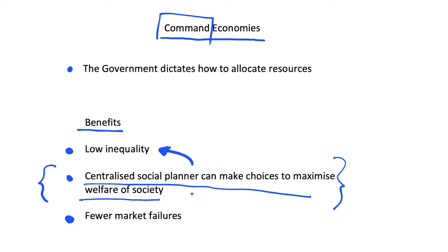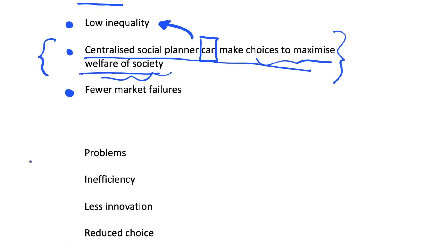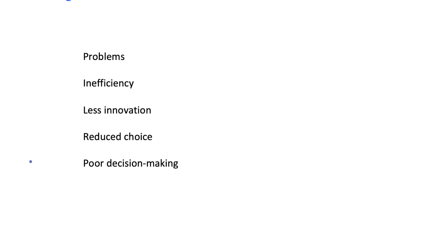These benefits do tend to rest on the assumption that the social planner makes choices that maximise the welfare of society. In reality we may have a social planner that is just looking to extract rents for himself, or to help out large businesses, or they simply don't have the information to make these good choices. These points tie into the problems of a command economy.